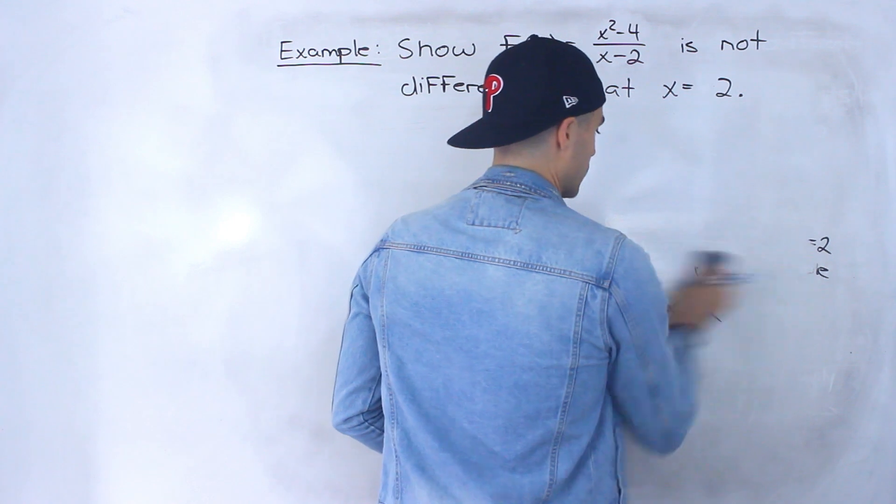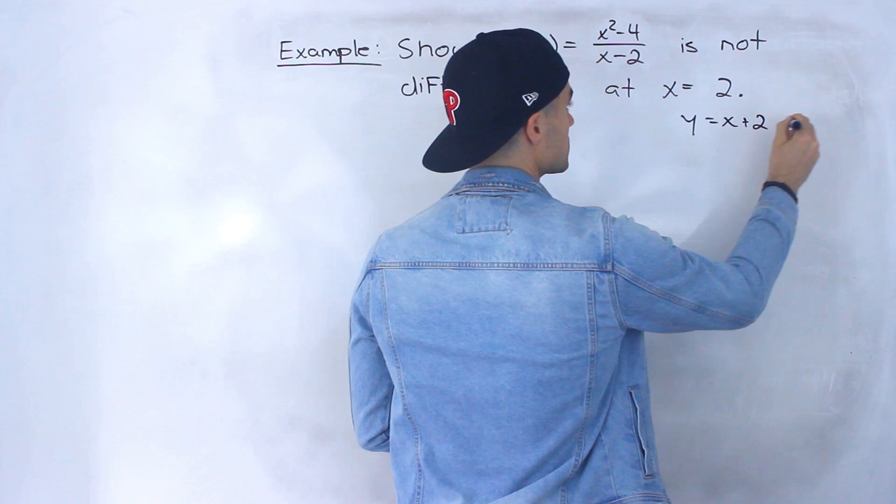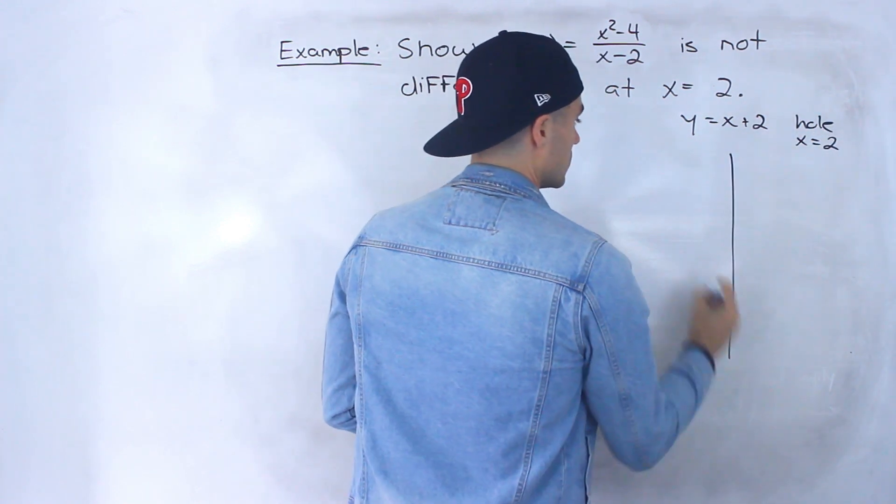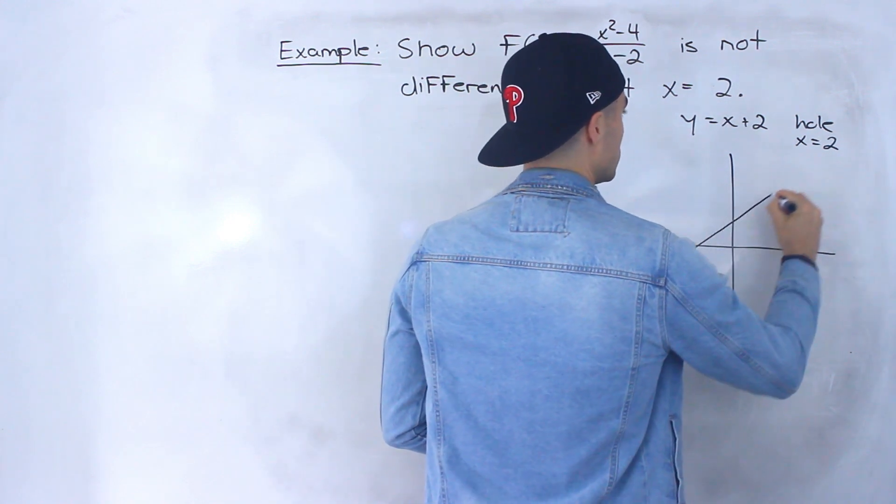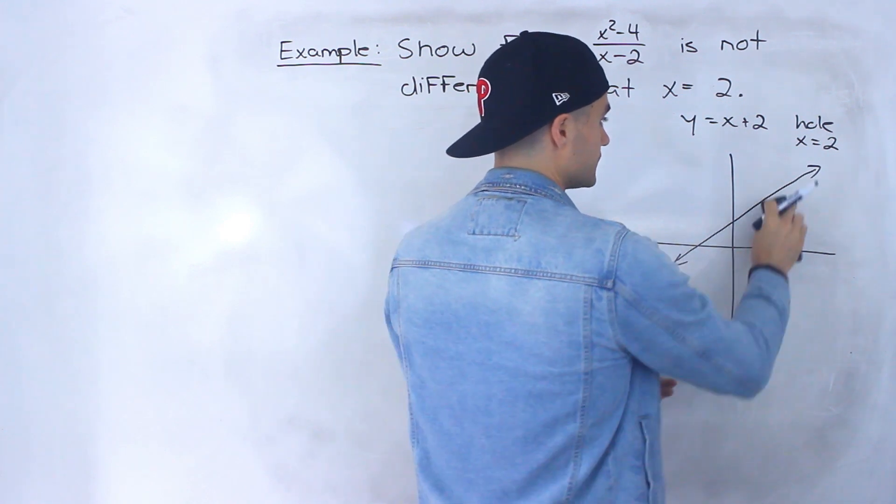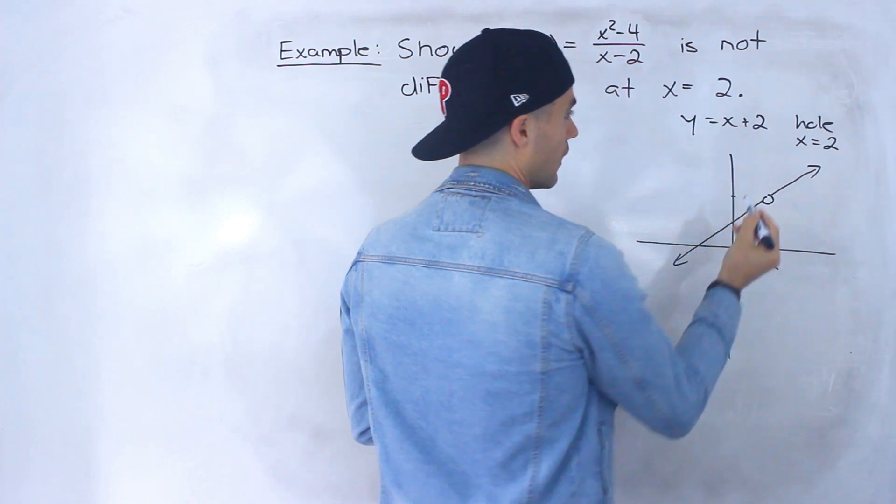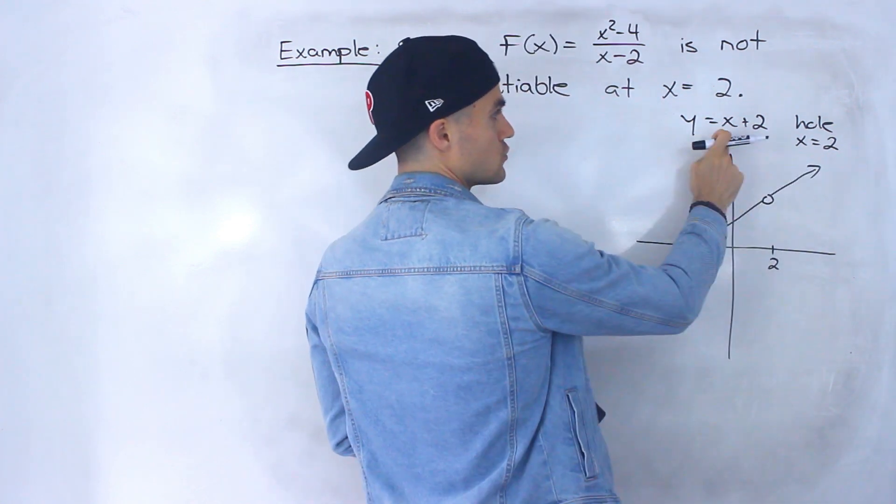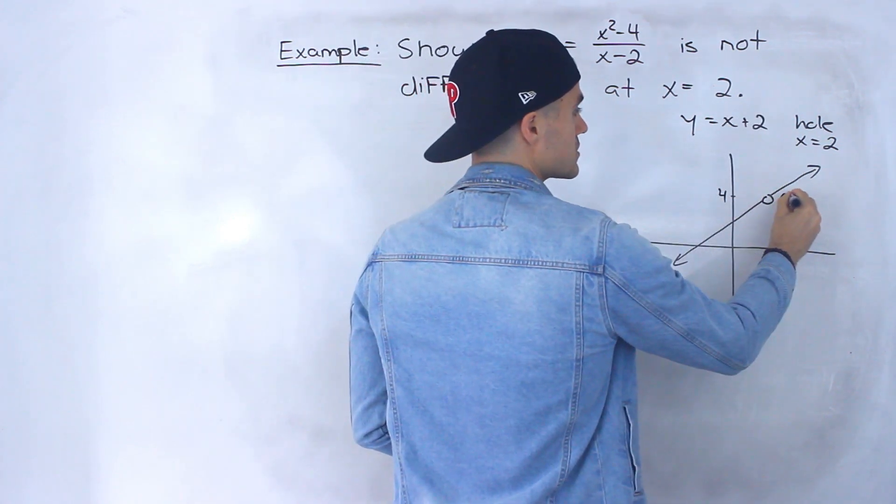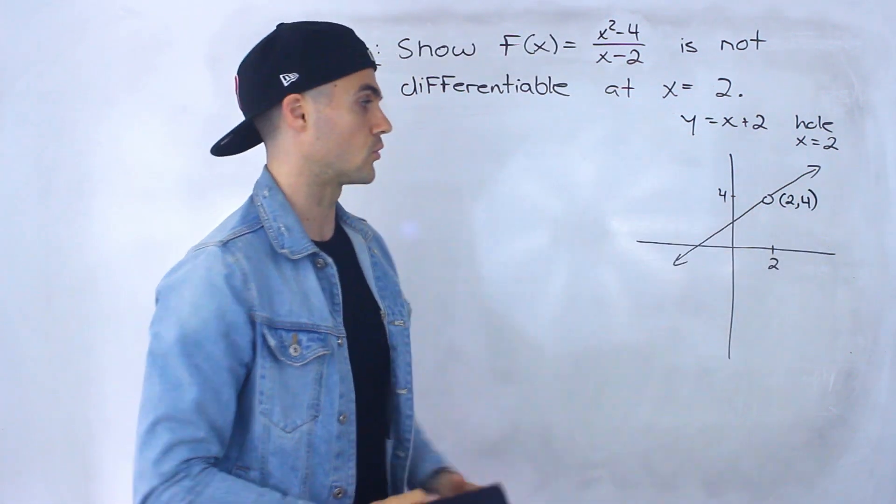So if we graph this I'm going to write out the line over here, x plus 2, and then there's a hole at x equals 2. So the line x plus 2 looks like this and then at this x value of 2 there's a hole there. And then what's the y value of that hole? Well we could plug in this 2 for this remaining line function. So 2 plus 2 is 4.